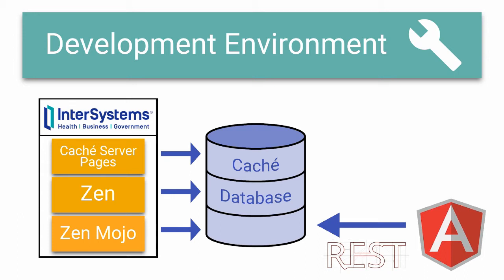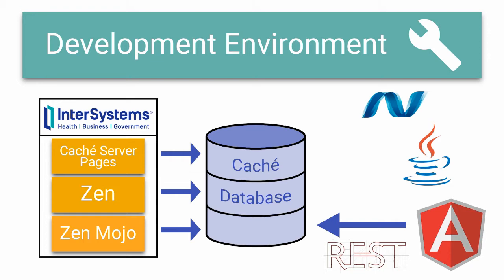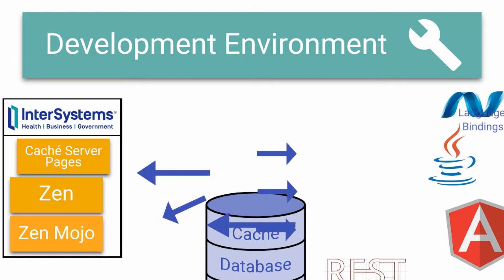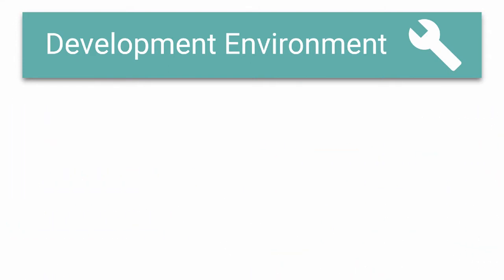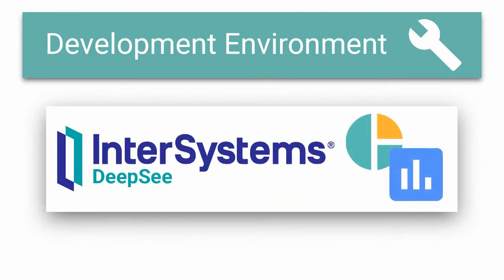Additionally, they can use third-party technologies such as Java and .NET to utilize Cache's language bindings for object and relational access. Finally, Cache provides support for business intelligence and analytics with DeepSee, one of its embedded technologies.